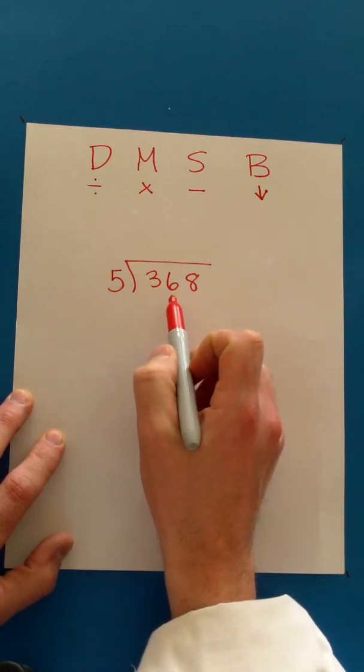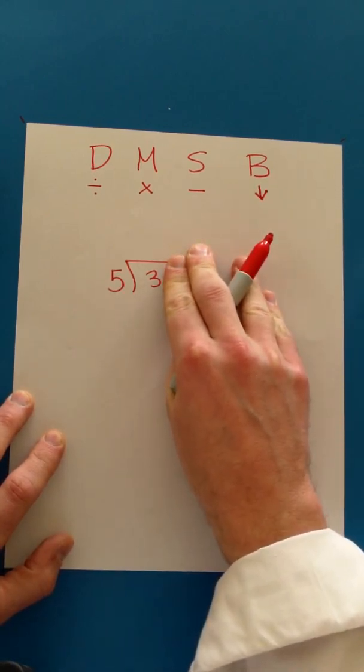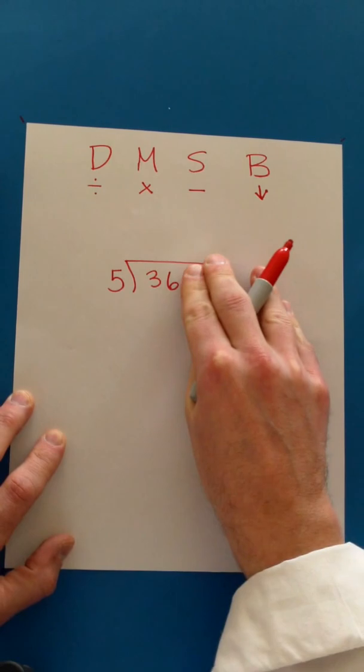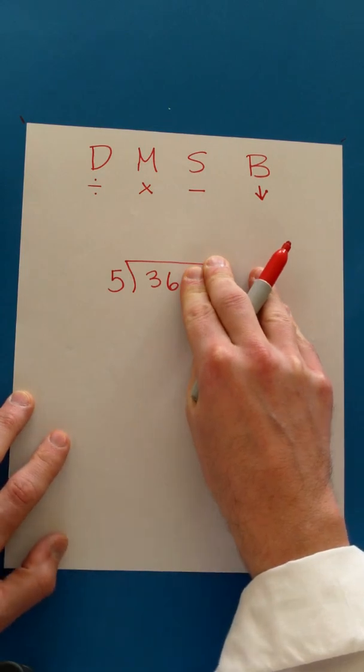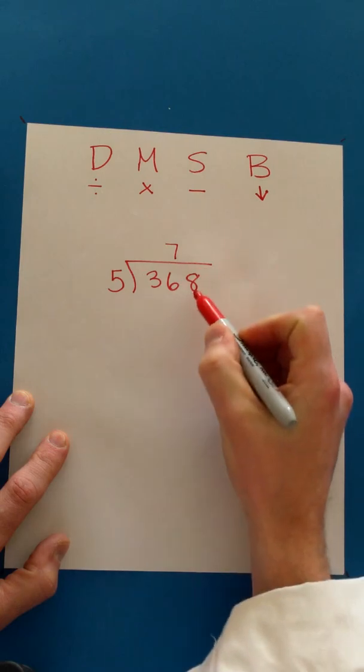That's a pretty big number. So we're going to start by looking at the first digit. How many times does 5 go into 3? 5 doesn't go into 3. So we need to use the second digit. Can 5 go into 36? Yes, 5 can go into 36. It goes into 36 seven times.